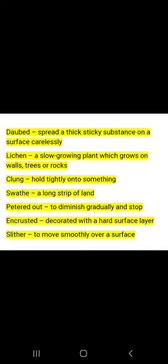Clung means to hold tightly onto something. Swathe means a long strip of land. Petered out means to diminish gradually and stop. Encrusted means decorated with a hard surface layer. Slither means to move smoothly over a surface. Fling means throw. Lurching means listing. Throb means pulsate. Ascent means to climb upwards. Cairn of rocks means the pile of stones on top of a mountain, especially where someone is buried.